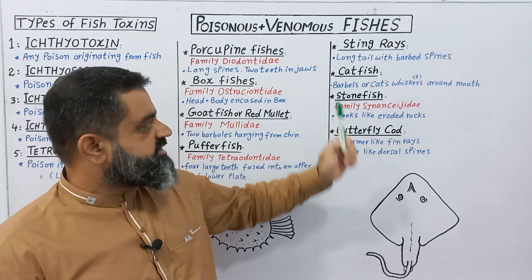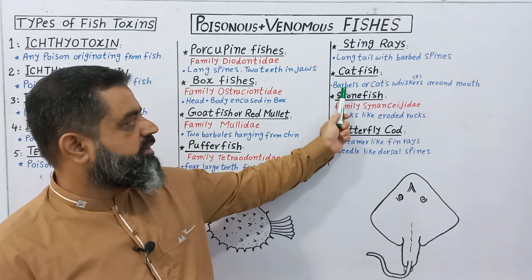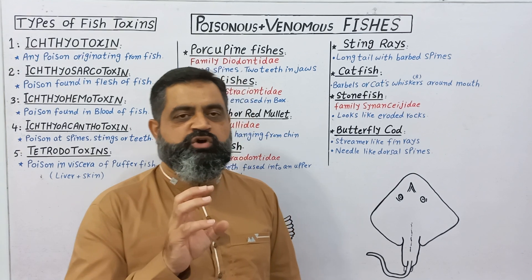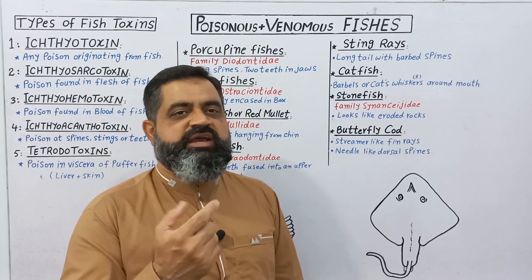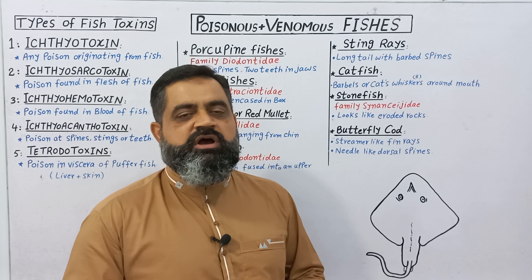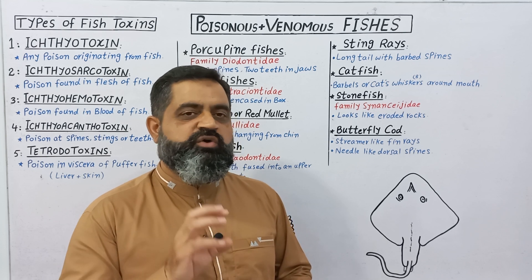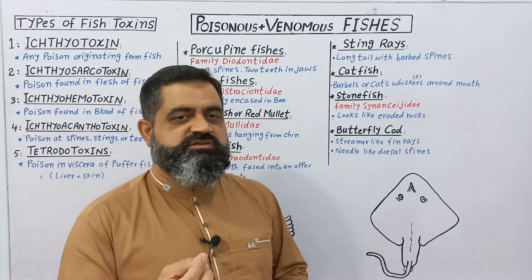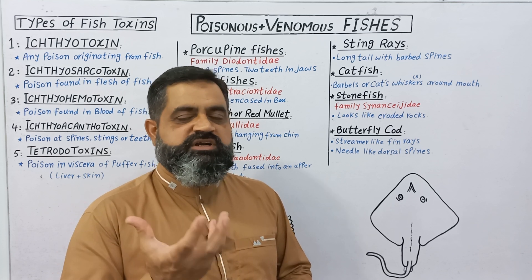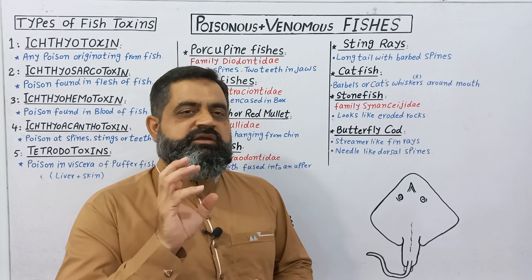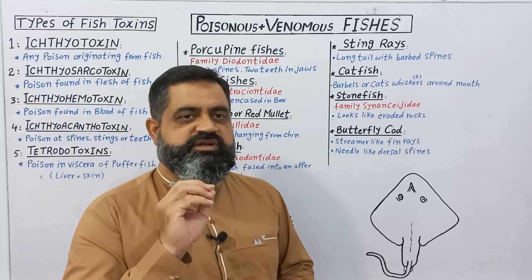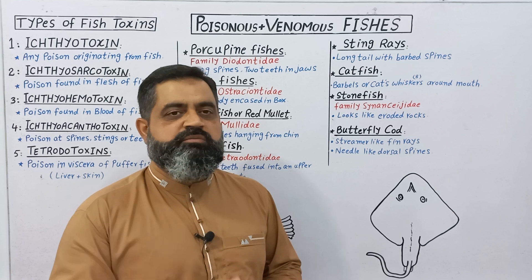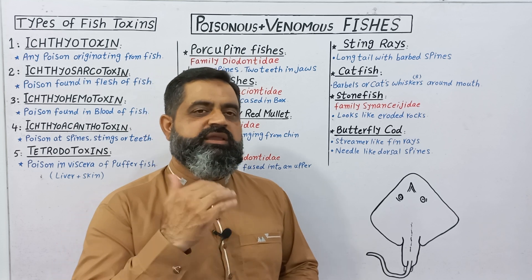The second example of a venomous fish is catfish. Catfish contain barbels or cat whiskers around their mouth — just like the hair-like structures around a cat's mouth known as whiskers, this catfish also has six to eight whiskers or barbs around their mouth. If somebody or an animal touches their barbs, this fish can inject poison through these barbules or spines and can kill another animal.